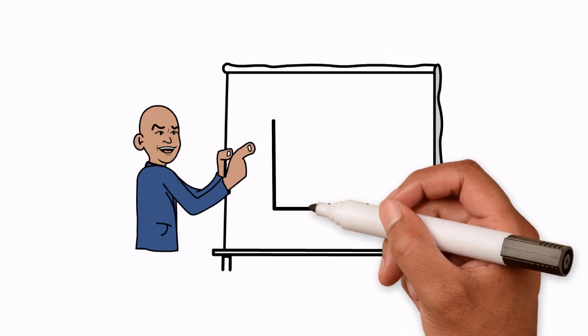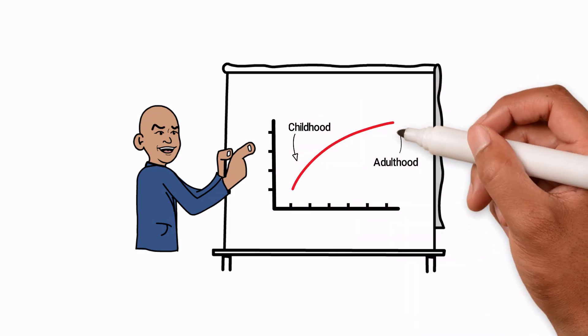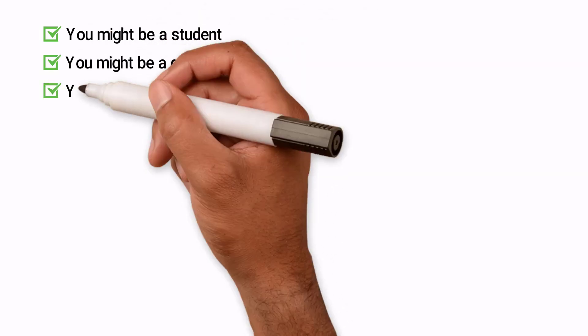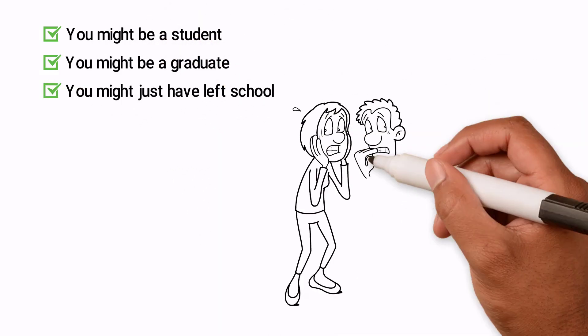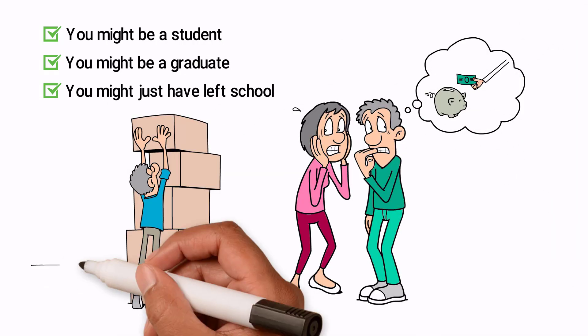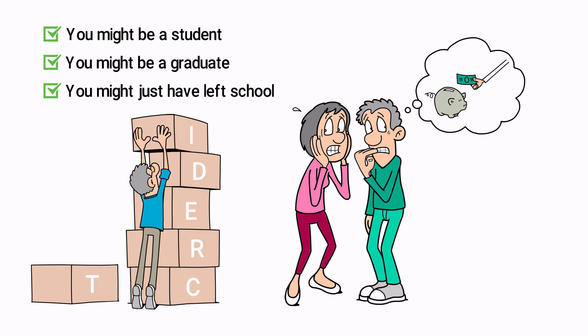Perhaps one of the steepest learning curves when it comes to finance is when we walk the line into adulthood. You might be a student, you might be a graduate, you might just have left school. Whatever your circumstances, you need to know how to save money and build a credit profile, and this week's 7 hacks is going to help you do just that.